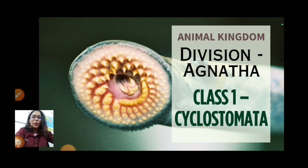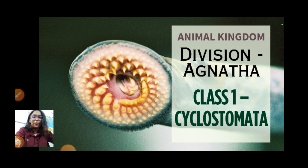Hello everyone, welcome to my biology class. This is Part 13 from the chapter Animal Kingdom. Today we are going to do Class 1, that is Cyclostomata. This falls under the division Agnatha, which are fishes not having any kind of jaws.